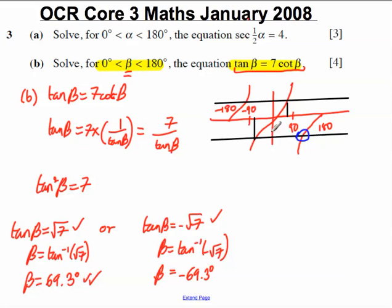Now if that's minus 69.3, it's 69.3 back from the 0, so it must be 69.3 back from this 180. So the other solution for beta, beta must equal 180 minus 69.3, which gives us 111 to 3 significant figures.